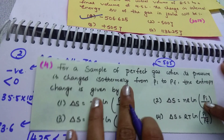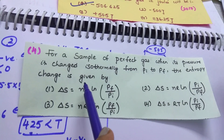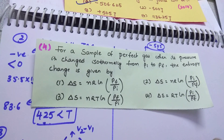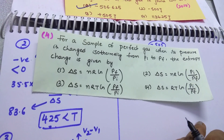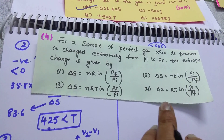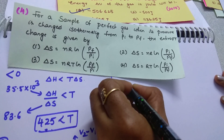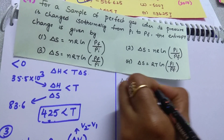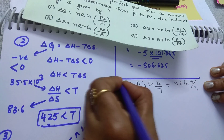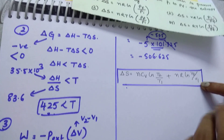Next question: for a sample of a perfect gas, when its pressure is changed isothermally from P-initial to P-final, the entropy change is given by which expression? The main formula to keep in mind is: delta S equals N·Cv·ln(T2/T1) plus N·R·ln(V2/V1).